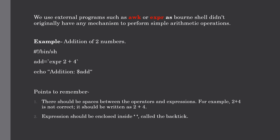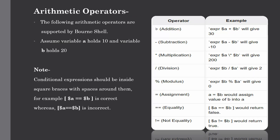Let us discuss our first type of operators, which is arithmetic operators. These are some arithmetic operators supported by the Bourne shell. Let's assume the value of a will be 10 and the value of b will be 20. These operators are very straightforward as we use them in day-to-day operations: addition, subtraction, multiplication, division, modulus, assignment operator, equality, and not equality.